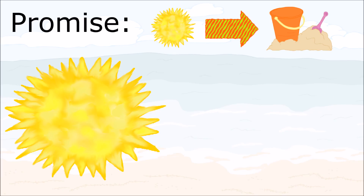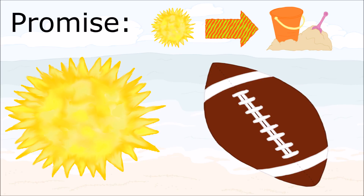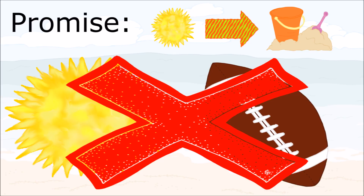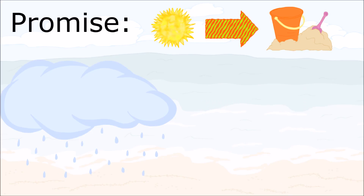Let's keep going and look at another set of possibilities. On the day of the scheduled trip, it is sunny, so the hypothesis is still true. However, instead of going to the beach, we go to a football game. The conclusion is false. So, did I break my promise? Yes, I did. I said if it is sunny, then we will go to the beach. It was sunny, but we didn't go to the beach, so I broke my promise.